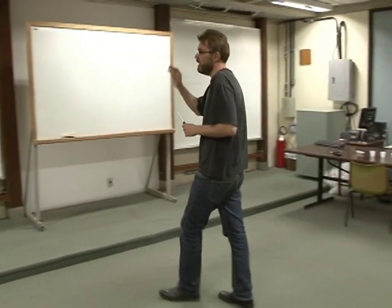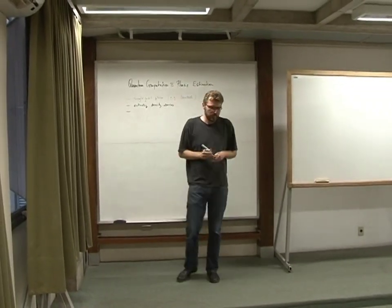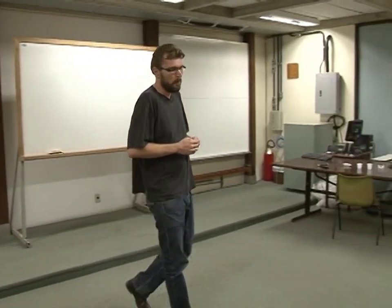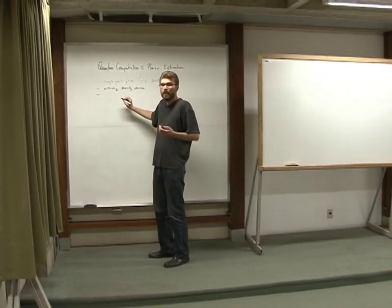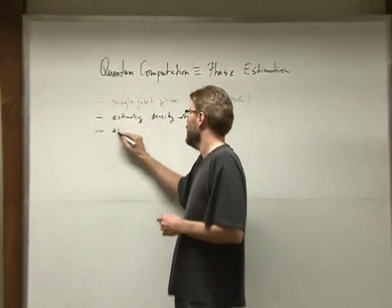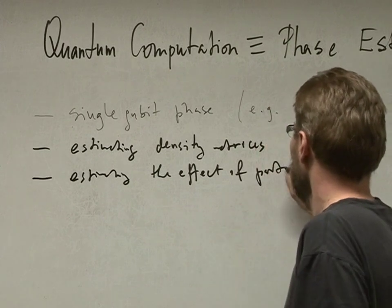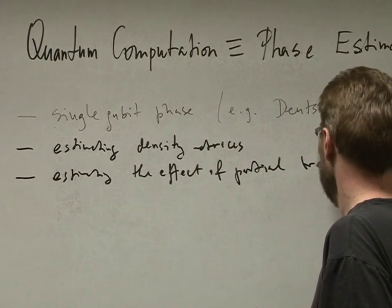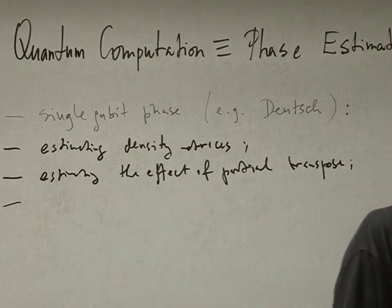I will phrase density matrix estimation exactly within the same interferometric setting. A density matrix is a Hermitian operator, so you should be able to estimate it. There is a beautiful way using interferometers to show how this is done. We can also do more interesting things: estimating entanglement. Not just the single density matrix, but if you have a two-qubit density matrix, you can estimate the effect of partial transposition.